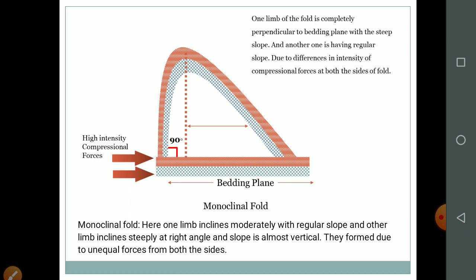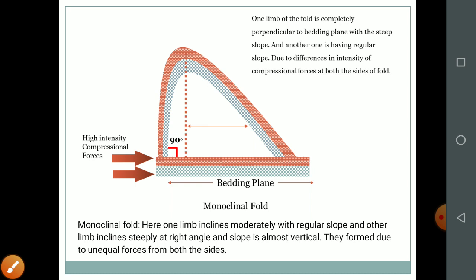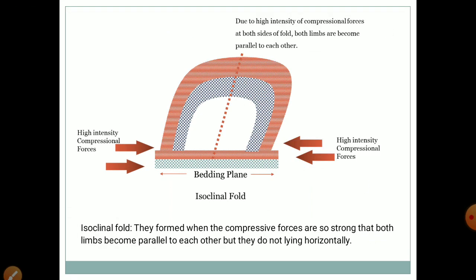The monoclinal fold is also a type of asymmetrical fold, but here one limb is almost perpendicular to the bedding plane at 90 degrees — one limb inclines moderately with regular slope and the other inclines steeply, almost vertically. They form due to unequal forces from both sides. The isoclinal fold means both limbs become almost vertical. They form when compressive forces are so strong that both limbs become parallel to each other, but they do not lie horizontally on the bedding plane.